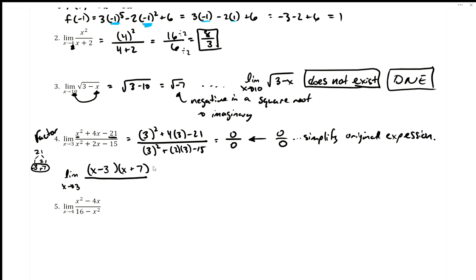Now factoring the denominator — just like the numerator, it should factor into two binomials. My focus is again x². I need factors of 15 that add up to 2. That looks like 3 and 5 — if I make the 5 positive and the 3 negative, they multiply to 15 and add to 2. So the denominator factors as (x - 3)(x + 5).